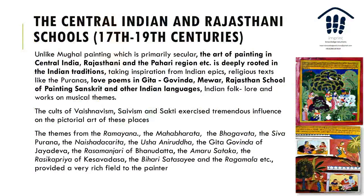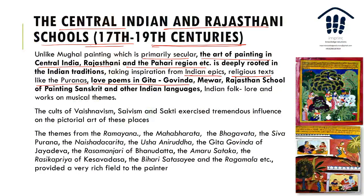The central Indian Rajasthani schools span the 17th to 19th century. Unlike Mughal painting, which is primarily secular, the art of painting in central India, Rajasthan, and the Pahadi region is deeply rooted in Indian traditions — drawing inspiration from Indian epics, religious texts like the Puranas, love poems like the Gita Govinda, and Indian religions such as Vaishnavism, Shaivism, and Shakti, which had a very strong influence on pictorial art.